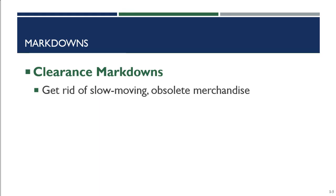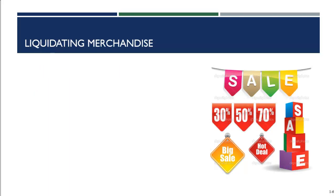When retailers set their initial retail price using cost, they factor in that at some point they'll need to mark merchandise down. So they often set the initial price higher than cost alone would suggest, so they can still make a profit when they clearance merchandise. When a retailer can no longer mark down a product without losing money, they liquidate. Clearance comes before liquidation.